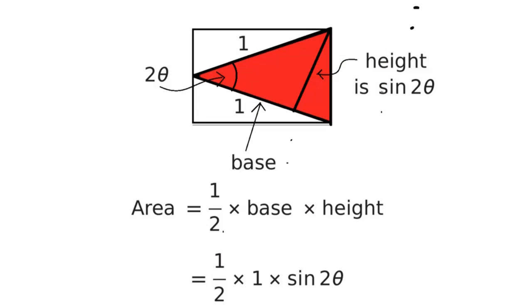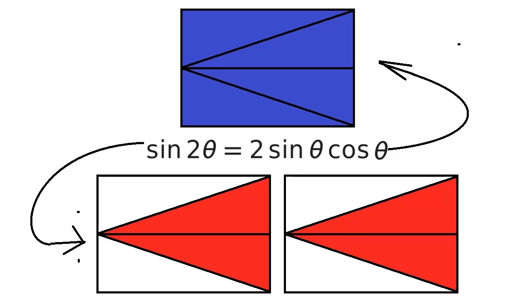The area of the triangle is one half of the base times the height. But the height is the sine of two theta. But the area of the two triangles is the same as that of our original rectangle. Thus the two expressions must be equivalent.